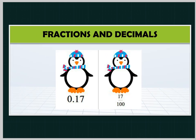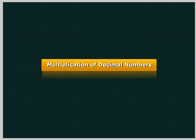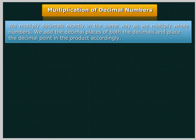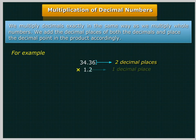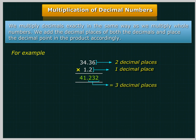Fractions and Decimals. Multiplication of decimal numbers: We multiply decimals exactly in the same way as we multiply whole numbers. We add the decimal places of both the decimals and place the decimal point in the product accordingly. For example, 34.36 with two decimal places multiplied by 1.2 with one decimal place is equal to 41.232 with three decimal places.